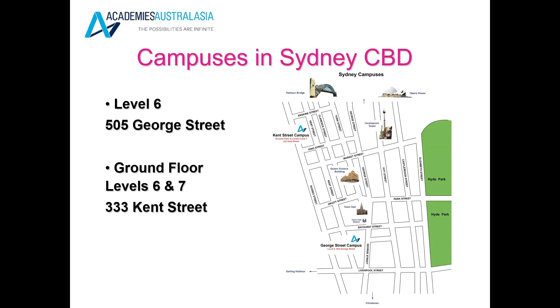Our main campus is in Sydney and we have two campuses in Sydney. One is on George Street and the other one is on Kent Street. Please refer to the map for more information about the locations in Sydney.